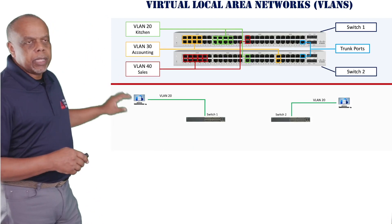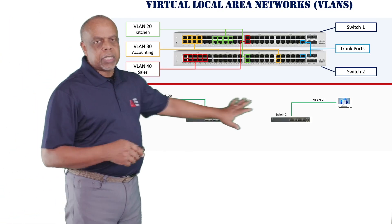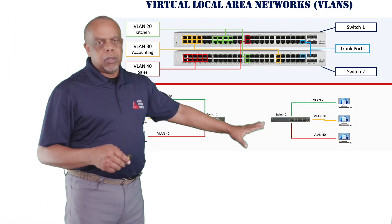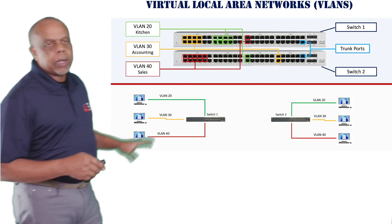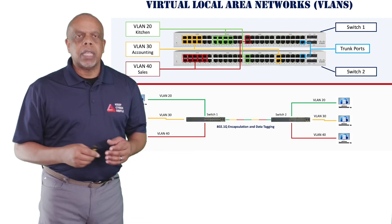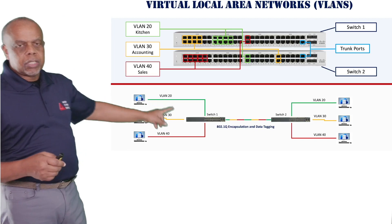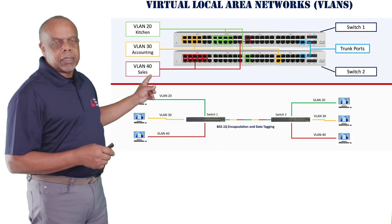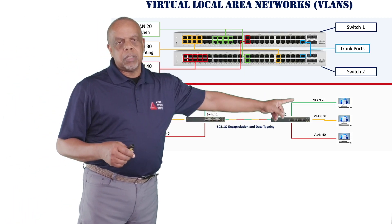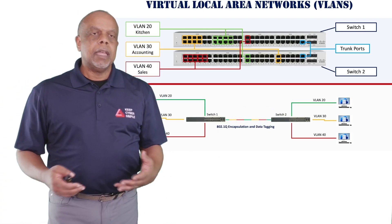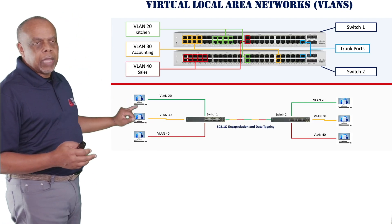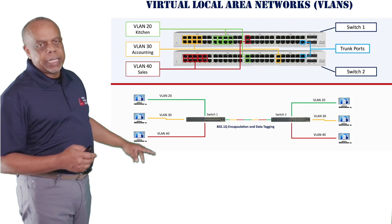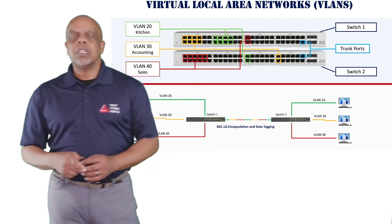Here are my two switches laid out. I've got VLAN 20 ports on one switch and some VLAN 20 ports on the other switch. I've got VLAN 30 and VLAN 40 on both switches as well. When I trunk them together, what 802.1Q does is encapsulation and data tagging. You can see this little pathway in between the switches — that is the trunk connection. A VLAN 20 packet, which is green, can talk to the other green machine over here because they're on the same virtual LAN. Traffic from VLAN 30 cannot talk to VLAN 20, and frames from VLAN 20 can't talk to VLAN 40. So I've now segmented the network using virtual LANs.